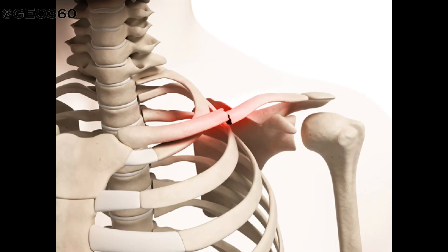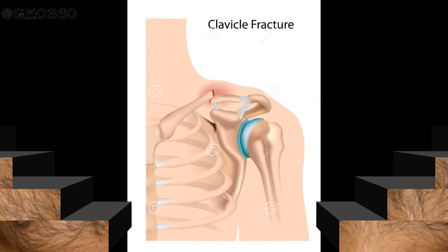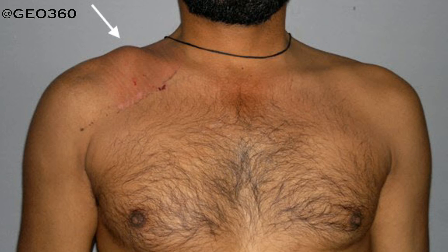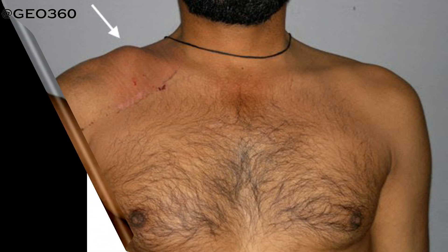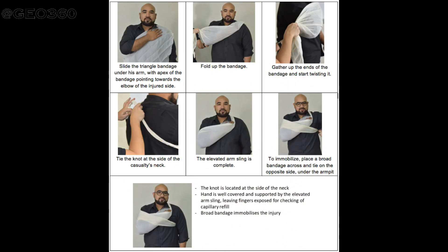In case of collarbone or shoulder bone injury, the casualty experiences severe pain aggravated by movement and tends to support the arm of the injured side, inclining their head toward the injured side. The broken end of the clavicle might be felt, and abnormal position of the shoulder blade may be noticed. For shoulder bone fracture, tell the person to immobilize the arm by holding it close to the body, do not remove clothing, and support the arm with a sling. For collarbone fracture, do the same and additionally place a pad in the armpit on the affected side and provide a triangular bandage sling if you are a trained first aider.